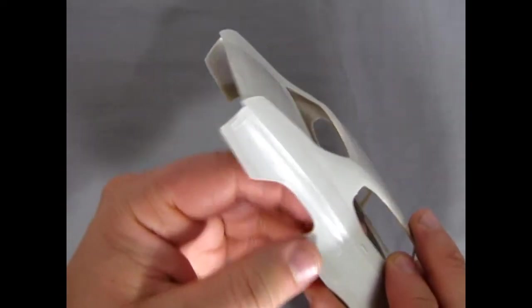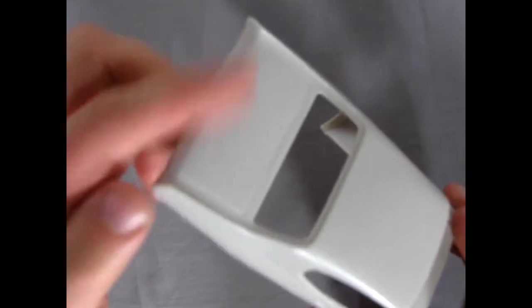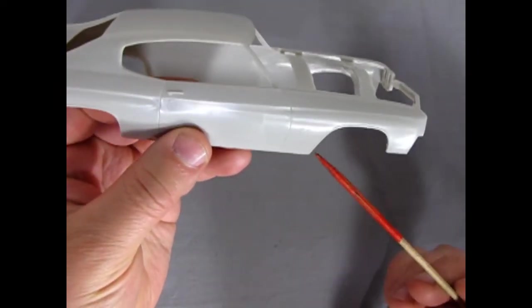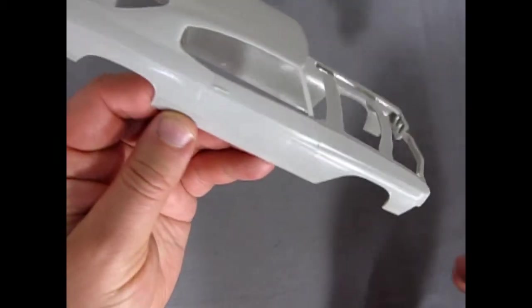Be careful of the Chevelle script back here. As well as your side marker lights. I know if you sand the trunk you're not going to hit those. But you know what I'm saying. And molding around the wheel arches. All kinds of goodness.